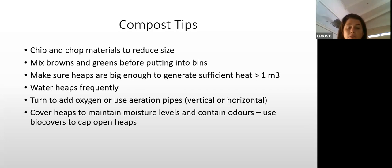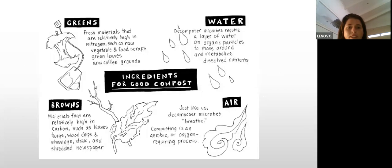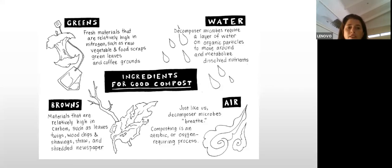The four ingredients for good compost are: green material, brown material, water, and air. Green material is high in nitrogen — food scraps, grass cuttings, coffee grounds. Brown material is high in carbon — leaves, wood chips, straw, paper. When mixing, you want one bucket of green material to two buckets of brown material. Water is vital to activate microbes, and air is vital for microbes to break the material down.